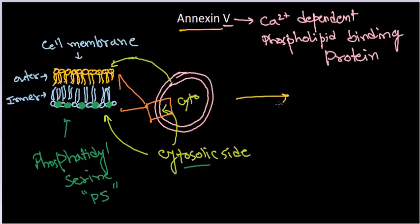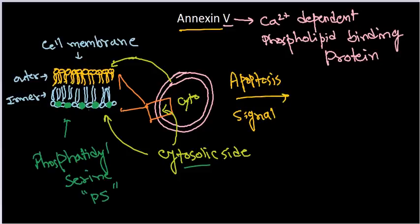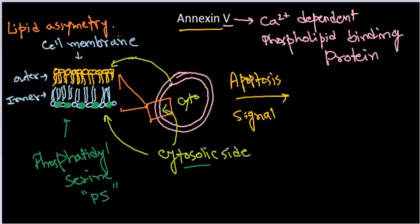Now, during the apoptotic condition — if you look at apoptosis — when the apoptotic signal comes in, a systemic change occurs in the cell membrane. Normally the phosphatidylserine should be placed in the cytosolic portion of the cell membrane and some other molecules are placed in the outer side. This differentiation is termed as lipid asymmetry, and it is super important for the cell to distinguish between the normal cell and the apoptotic cell. During apoptosis, once the cell receives the apoptotic signal, there becomes an asymmetric shift.